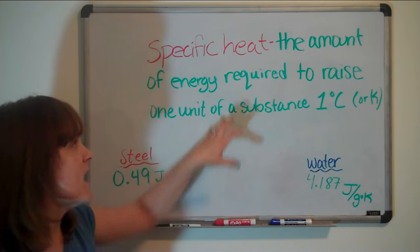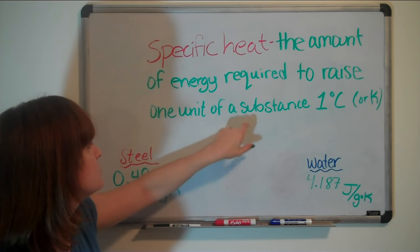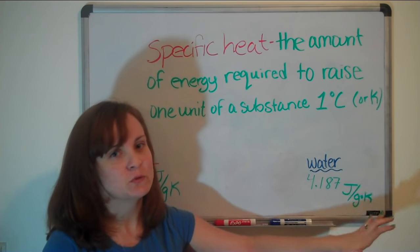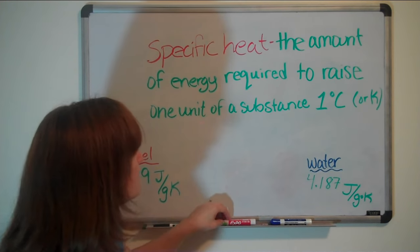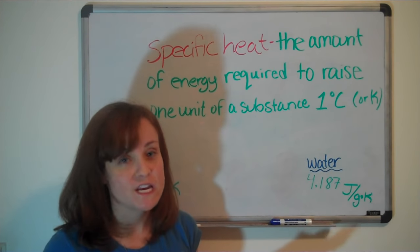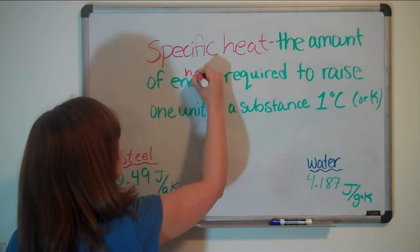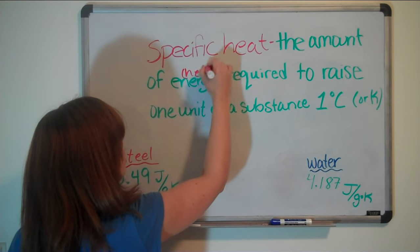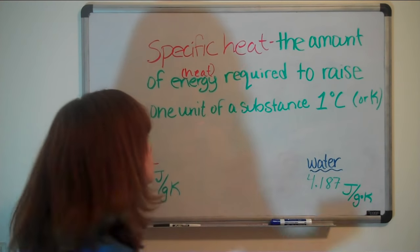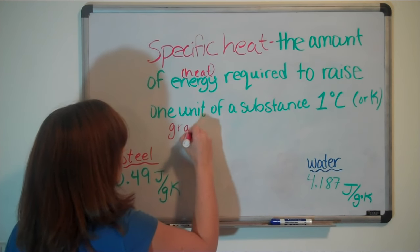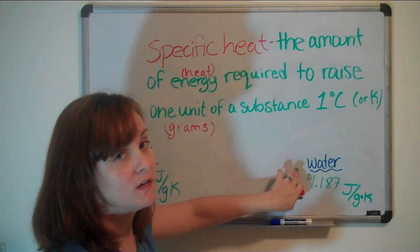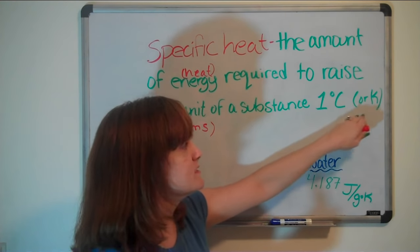Specific heat is defined as the amount of energy required to raise one unit of a substance one degree Celsius or Kelvin. Let's break it down: the amount of thermal energy or heat required to raise one unit — usually grams — of a substance, such as water or steel, one degree Celsius or Kelvin.